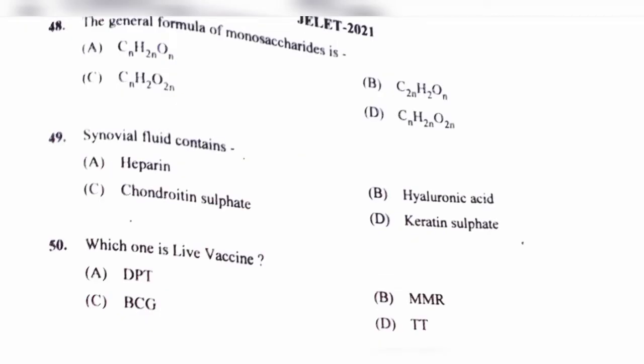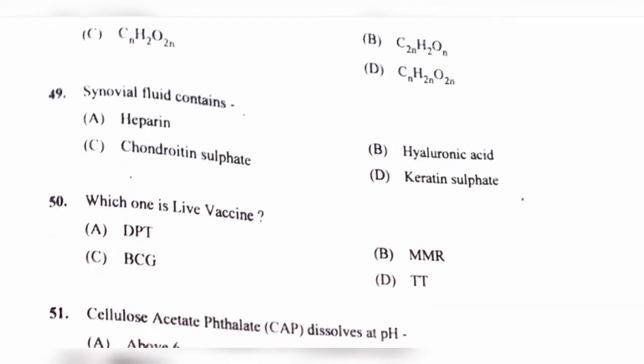Question number 49. Synovial fluid contains: option A, Heparin; option B, Hyaluronic acid; option C, Chondroitin sulfate; option D, Keratin sulfate. The correct answer is option B, Hyaluronic acid. Synovial fluid, known as joint fluid, is a thick liquid located between our joints. It contains hyaluronic acid, lubricin, proteinases, and collagens.